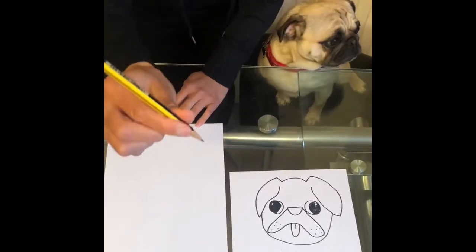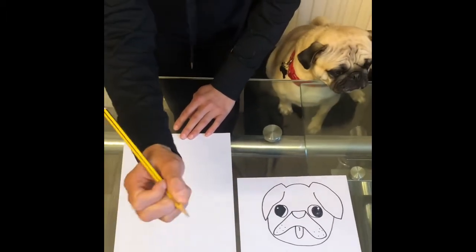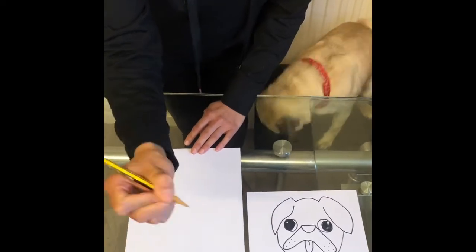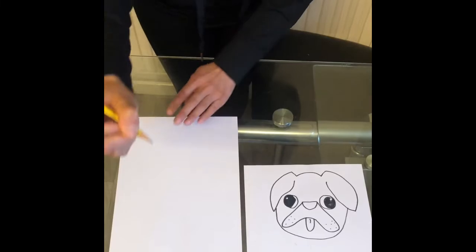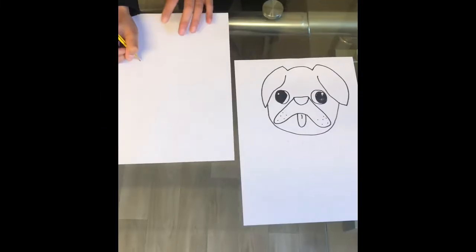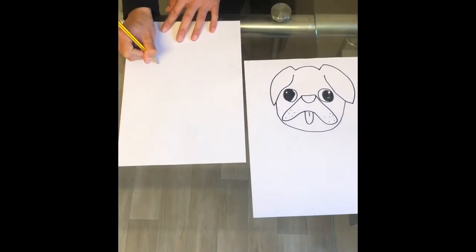First of all, we're going to hold our pencil with finger and thumb with our two fingers behind, nice and strong at the bottom of the pencil so we can hold it tightly. I'm going to draw the eyes first. I'm going to draw two big circles.